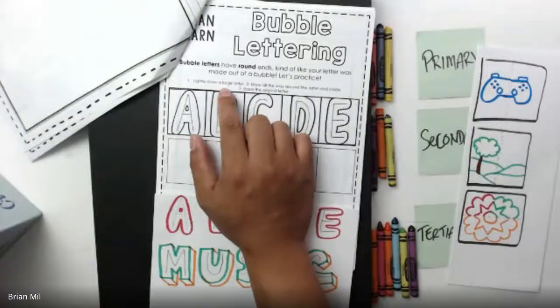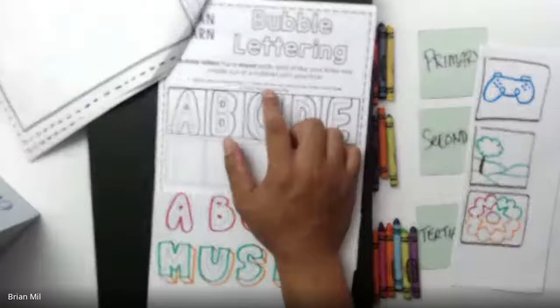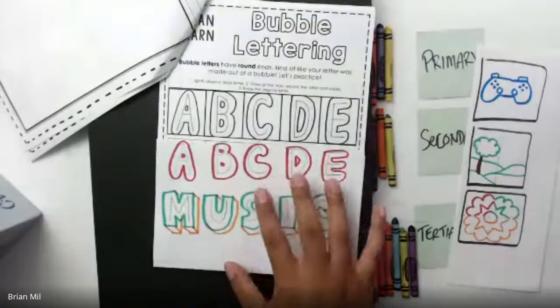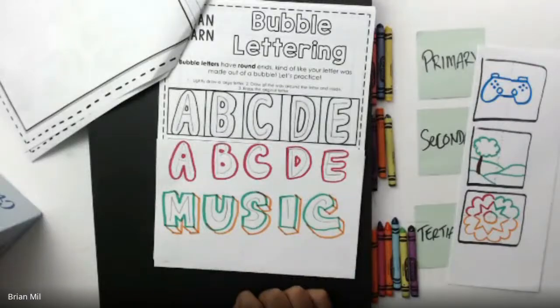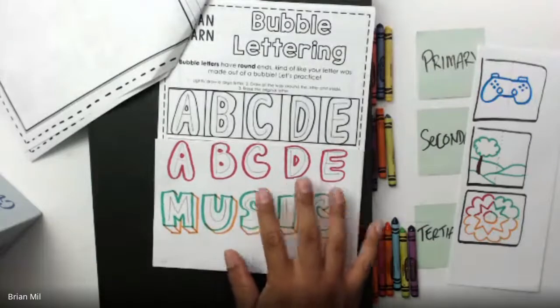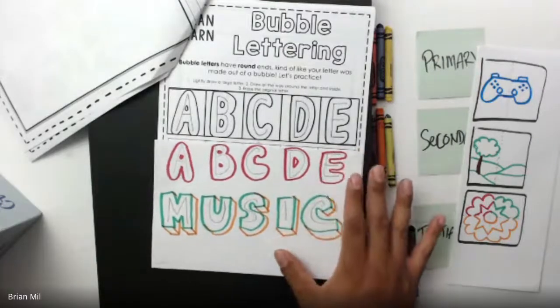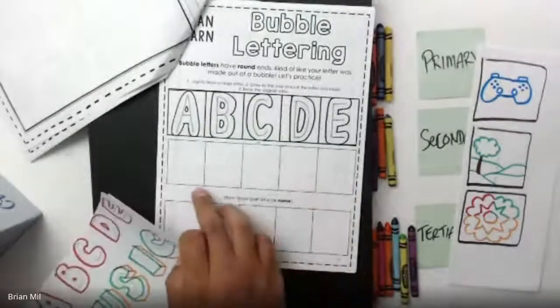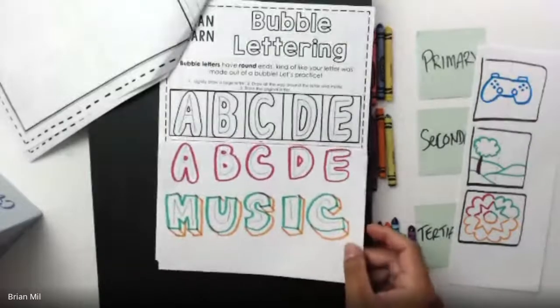We're going to try to copy what they did using their directions. Step number one: lightly draw a large letter. Step number two: draw all the way around the letter and inside. Step number three: erase the original letter. I have an announcement - if you are from Mrs. Weber's class, make sure you stay after, we have something to discuss.